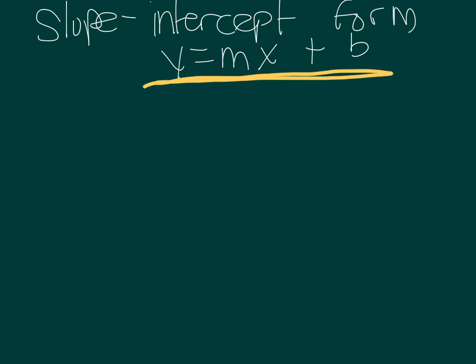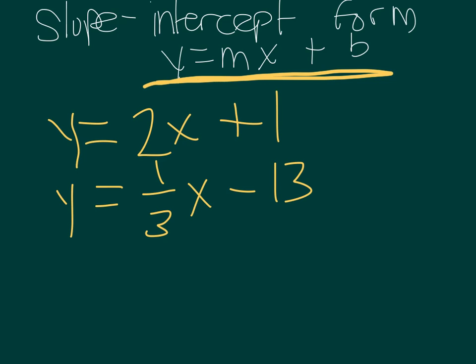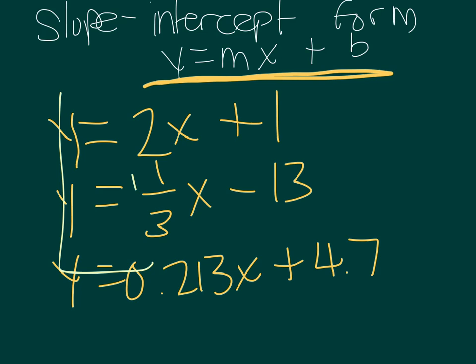So some examples of things that might be linear equations are the very basic, y equals 2x plus 1. Or there could be fractions involved, y equals one-third x minus 13. Or they can involve decimals, y equals 0.213x plus 4.7. Even though it's got some ridiculous numbers in it, these are all linear.